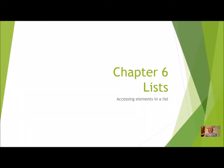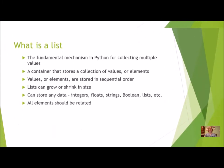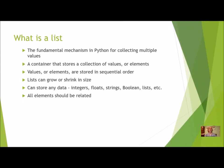Today we're going to review what you already learned about lists and talk more about accessing elements and the other way that you can traverse a list. Let's review what a list is. Remember that it is the fundamental mechanism in Python for collecting multiple values — a container that stores a collection of values or elements. These values are called elements and they are stored in sequential order.